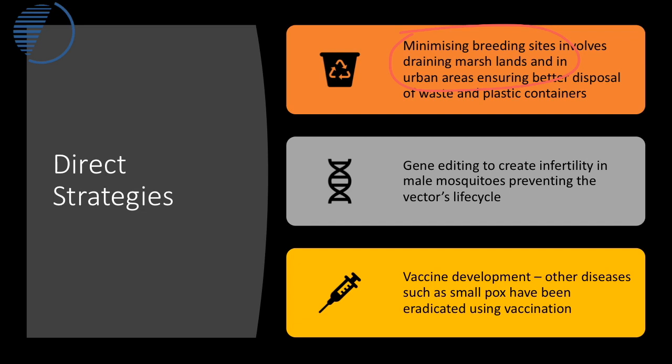UCL have been working on gene editing in the mosquito, trying to make the male mosquito infertile so it cannot breed and mosquitoes will die out. However, it is difficult to implement over a large area. Finally, there are several different kinds of vaccines currently in development, being trialled in countries like Malawi.